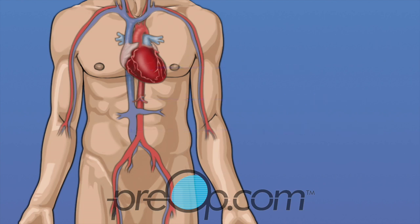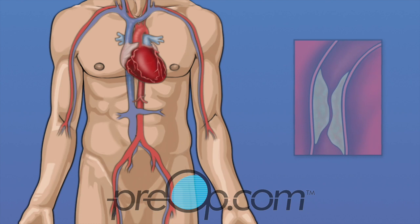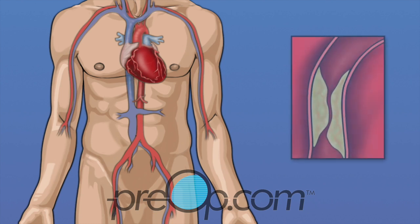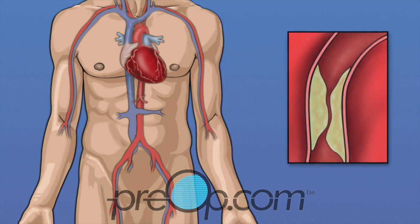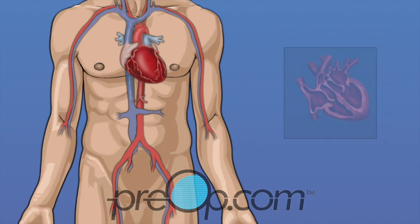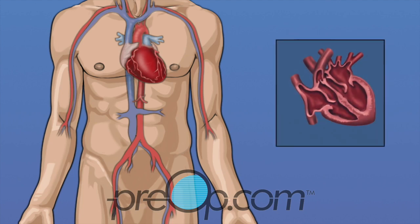During a cardiac cath, your cardiologist will test how well your heart muscle is working. The arteries that carry oxygen to the heart are examined and blocked arteries can be identified. The inside of the heart, the walls and important flaps called valves, are checked for problems.